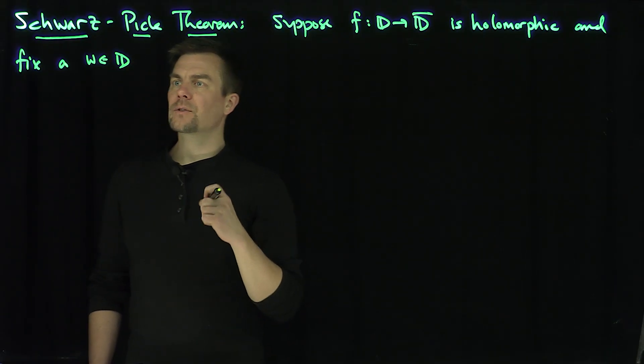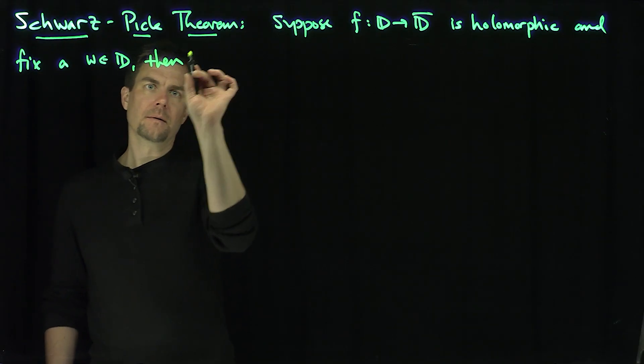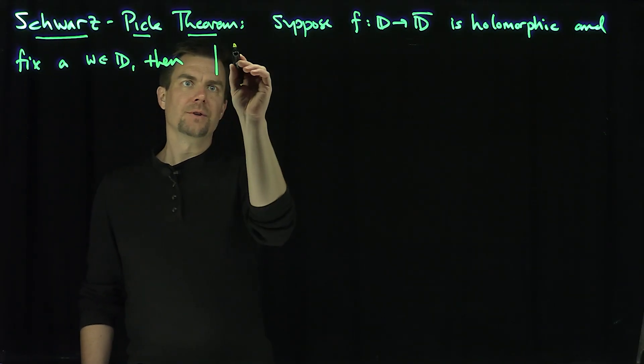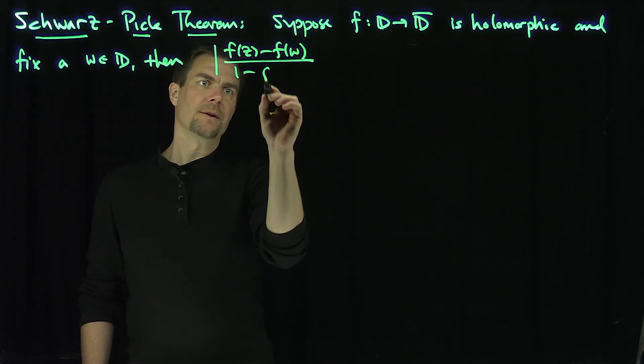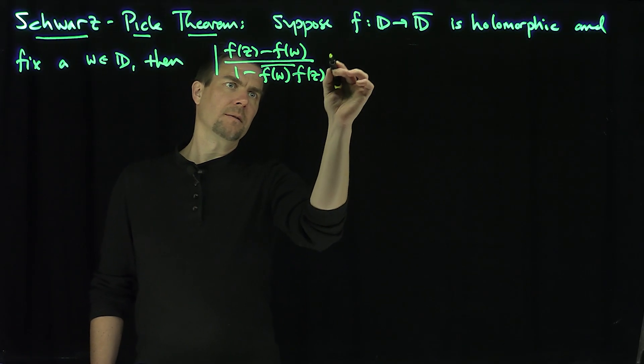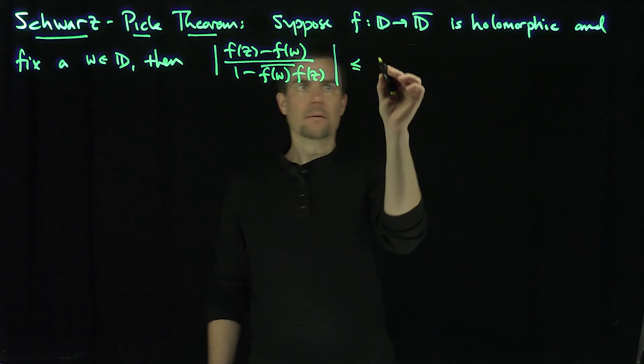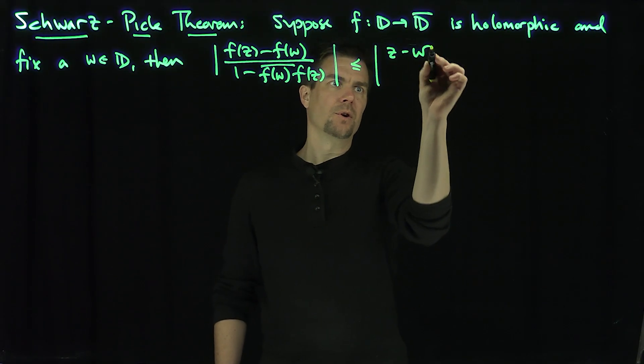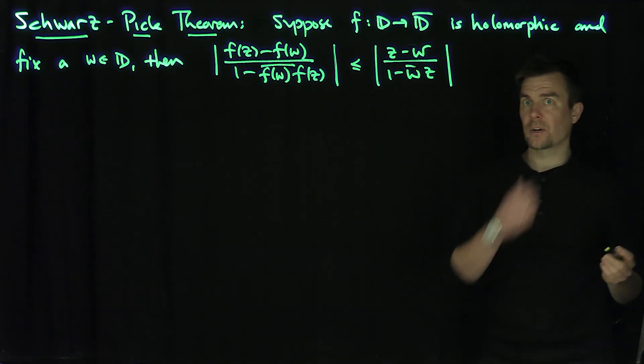Then the modulus of f(z) minus f(w) over 1 minus f(w) bar f(z), this quantity over here is no more than the modulus of z minus w over 1 minus w bar z. That's the Schwartz-Pick inequality.